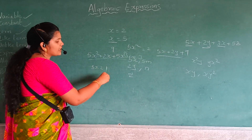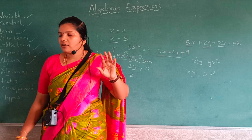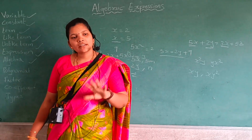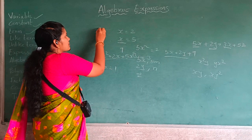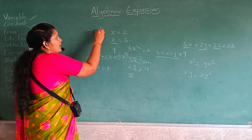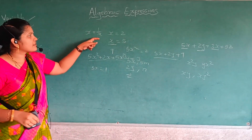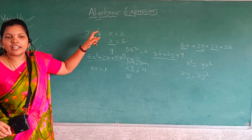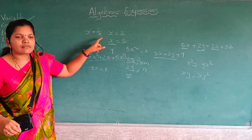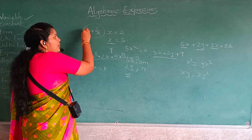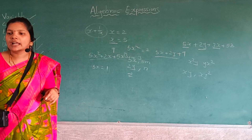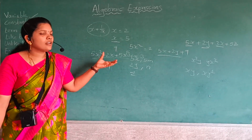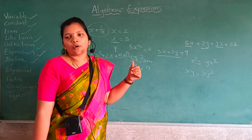A polynomial means it must have a positive degree. Then what is a negative degree? Consider x plus 1 divided by x — here 1/x means x to the power of minus 1, so there is a negative degree. This is not a polynomial. A polynomial must have a positive degree.